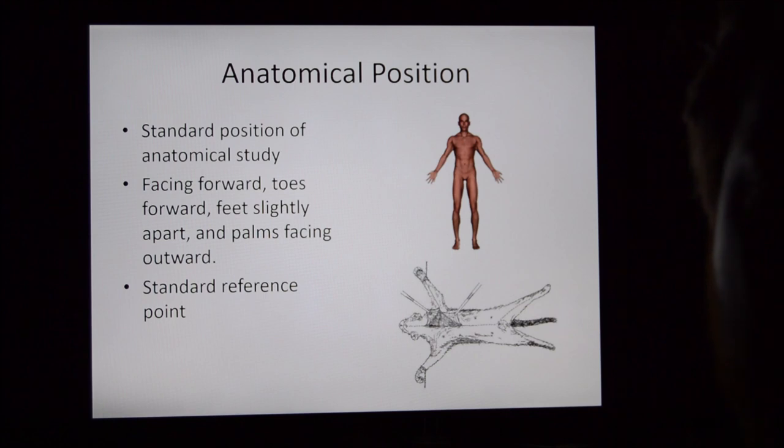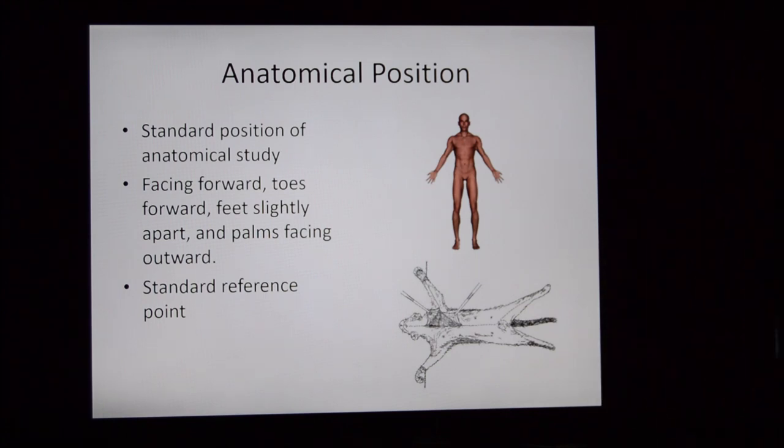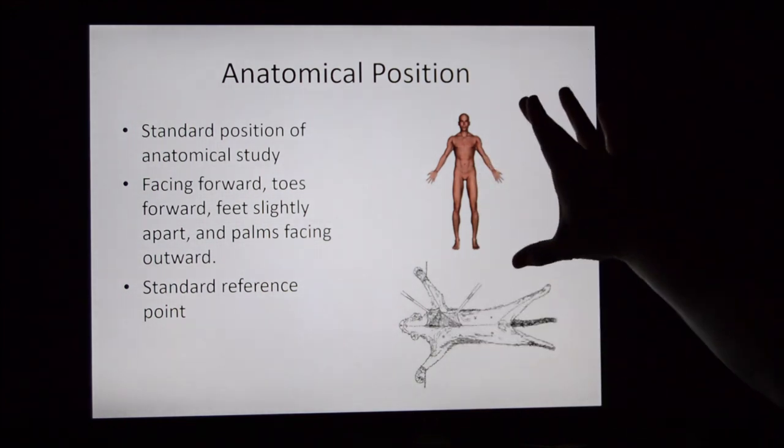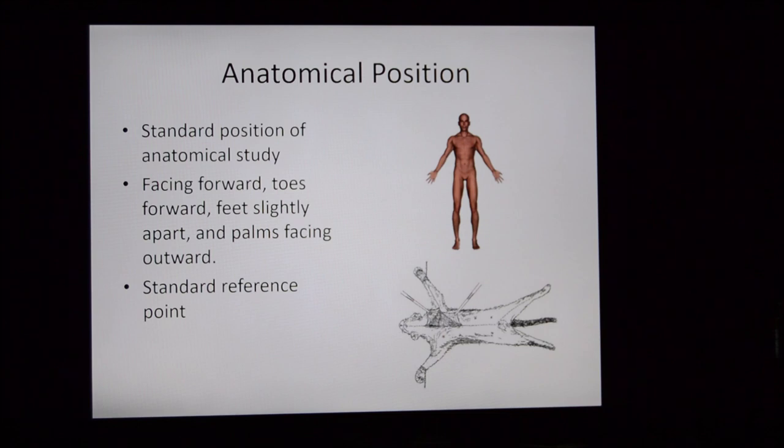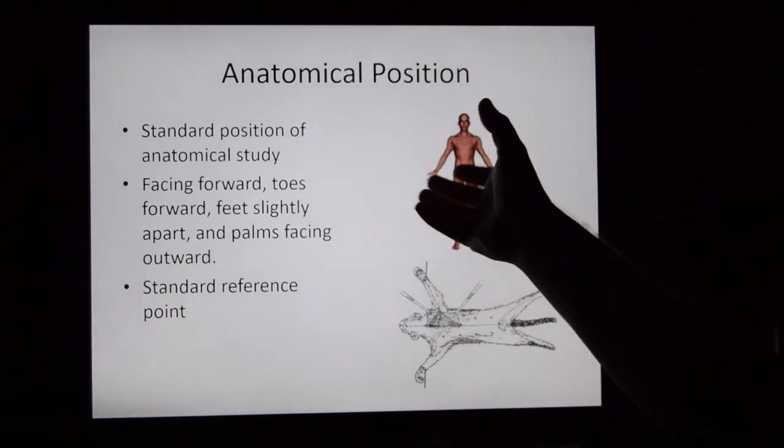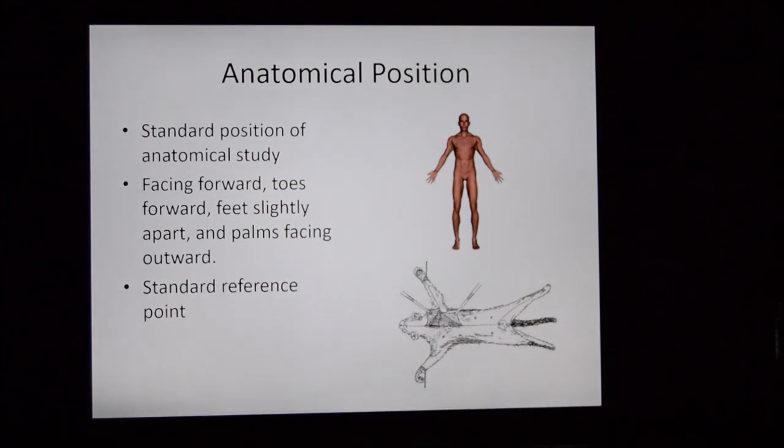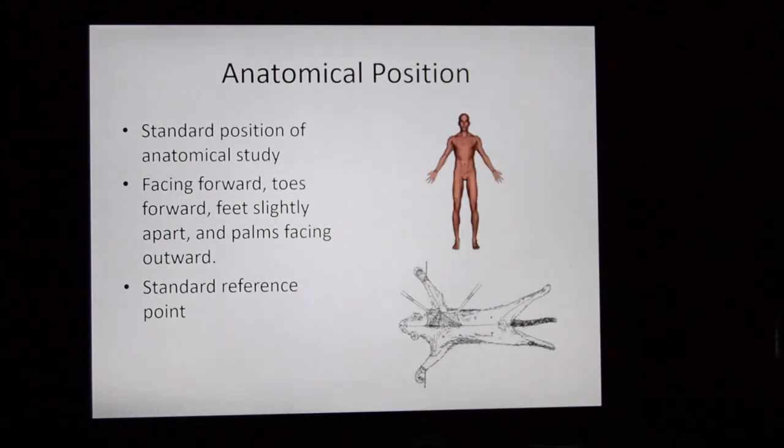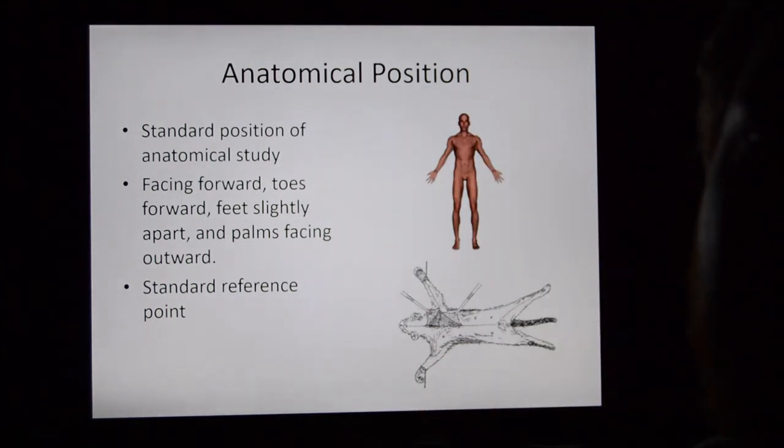First things first: anatomical position. Anatomical position is standing up, palms facing forwards. This is how you will always reference the human body. We do this as a method of standardization so that anytime we're talking about any structure in the body, like the head is always superior to the feet even if you're hanging upside down. You would say that the arms are lateral compared to the torso which would be more medial.